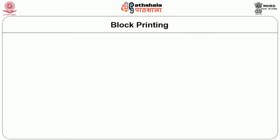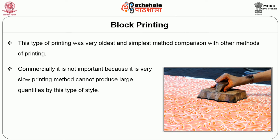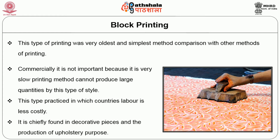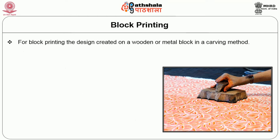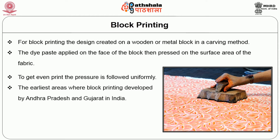First, block printing. This type of printing is the oldest and simplest method compared with other methods. Commercially it is not important because it is a very slow printing method and cannot produce large quantities. It is practiced in countries where labor is less costly, and is chiefly found in decorative pieces and upholstery production. For block printing, the design is created on a wooden or metal block by a carving method; the dye paste is applied on the face of the block and then pressed on the surface area of the fabric, with pressure applied uniformly.